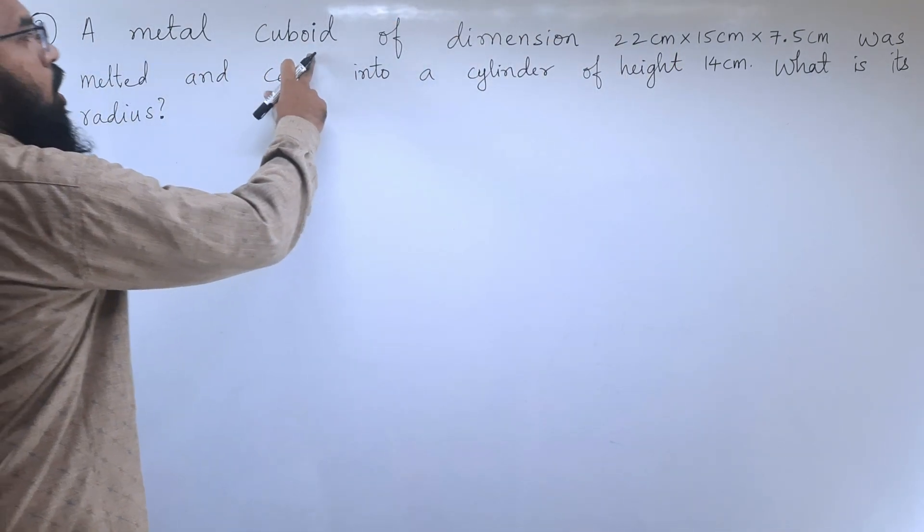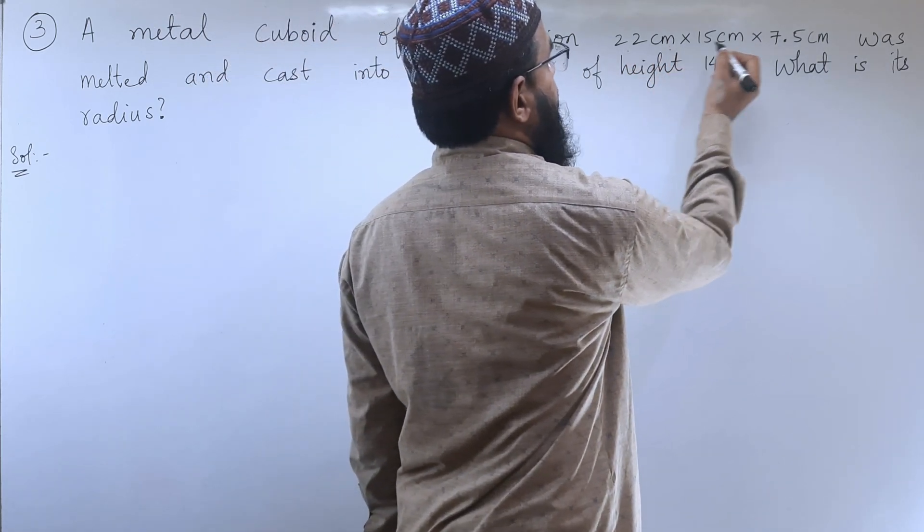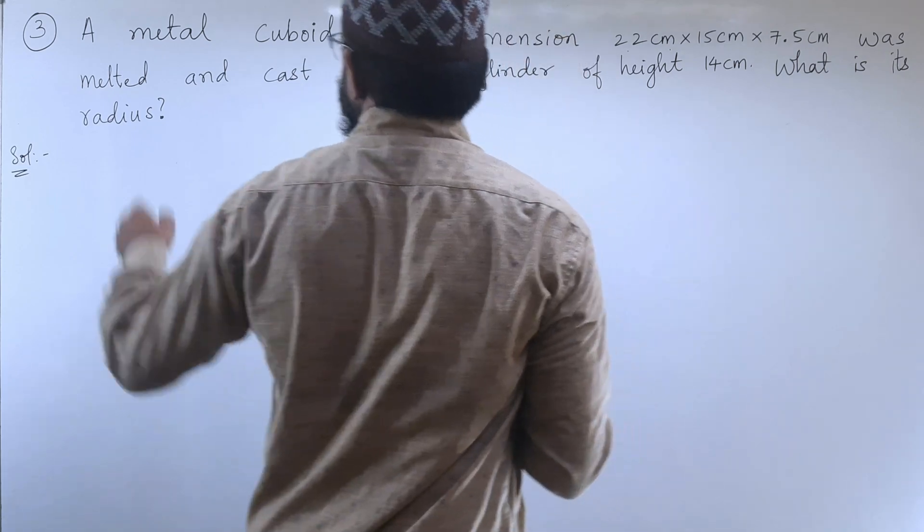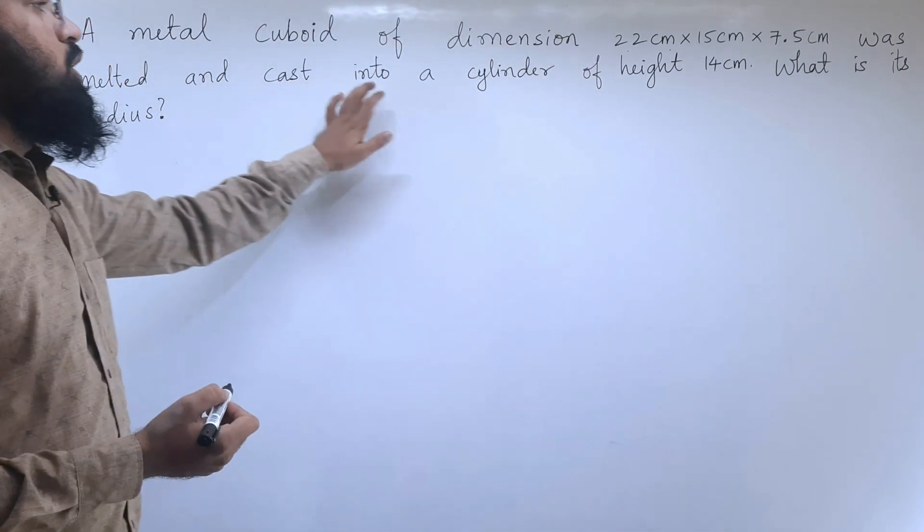A metal cuboid of dimension 22 centimeter, 15 centimeter, 7.5 centimeter was melted and cast into a cylinder.